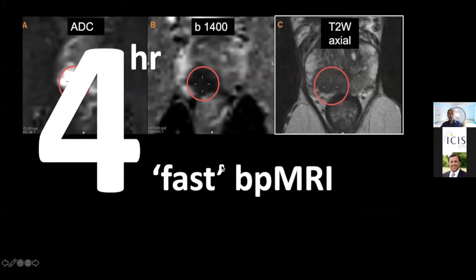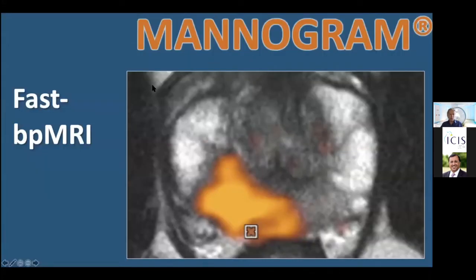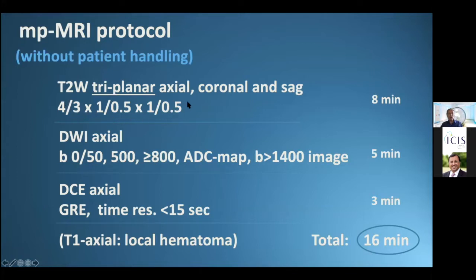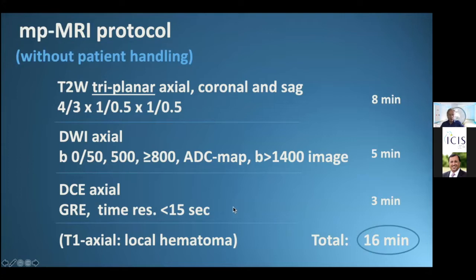This is called the manogram — anatomy with a superposition of diffusion: T2 and diffusion only. The PI-RADS steering committee protocols for multiparametric MRI advise T2-weighted imaging in two or three planes, diffusion with low, intermediate, and high B values, calculation of an ADC map and a B1400 or higher image, and finally a DCE injection followed by T1-weighted contrast images with 15-second or faster time resolution. Total examination time is about 16 to 20 minutes.